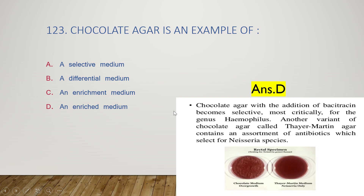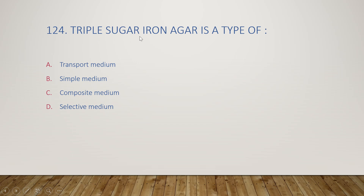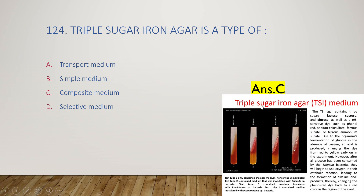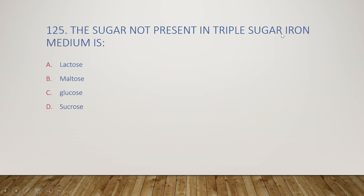Next question: triple sugar iron agar is a transport medium, simple medium, composite medium, or selective medium? The right answer is option C, composite medium. Triple sugar iron contains three sugars — lactose, sucrose, and glucose — plus iron. The next question: which sugar is NOT present in triple sugar iron medium — lactose, maltose, glucose, or sucrose? The answer is option B, maltose, as the three sugars present are lactose, glucose, and sucrose. Thank you for watching.